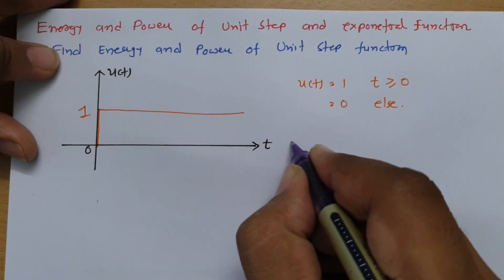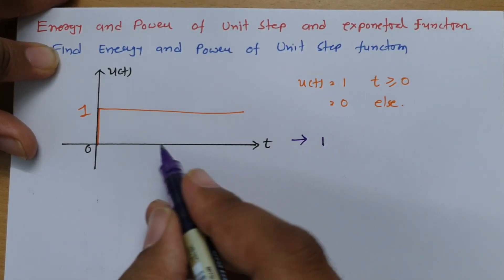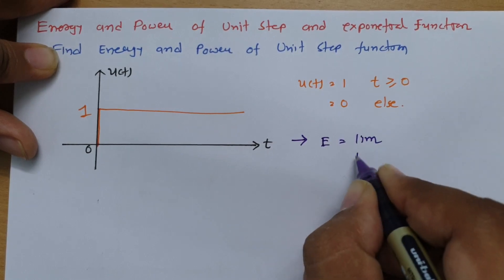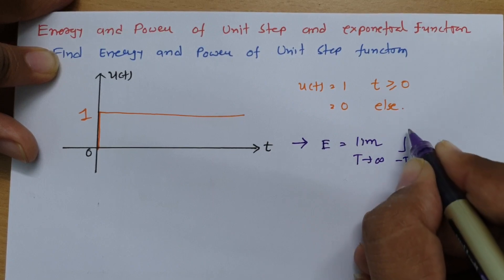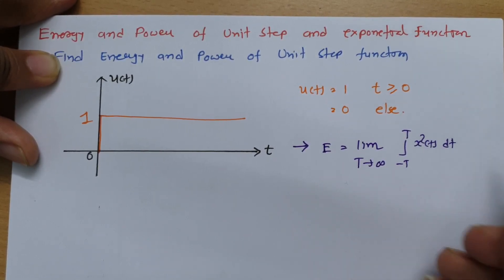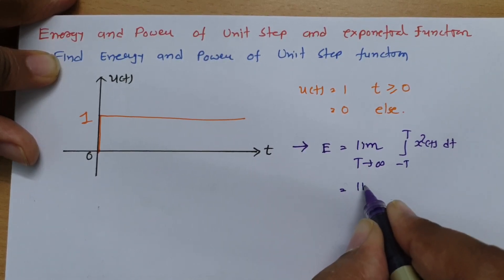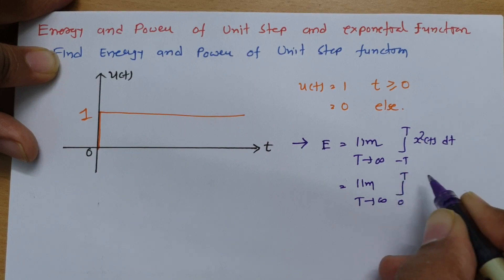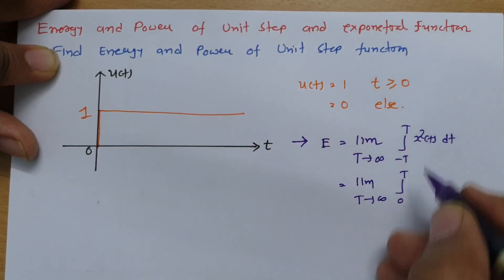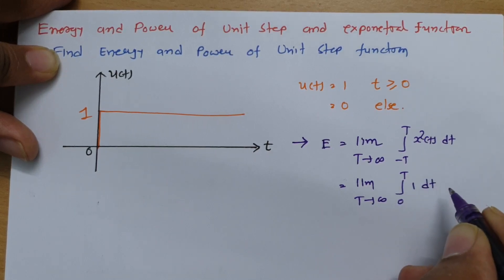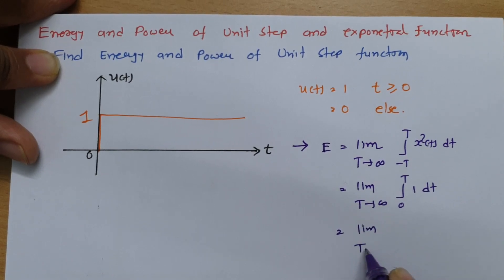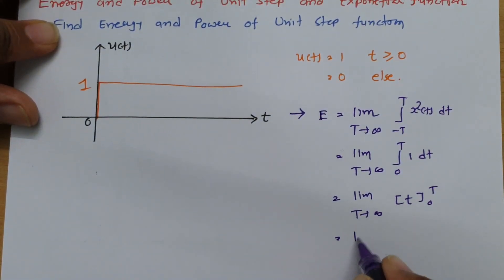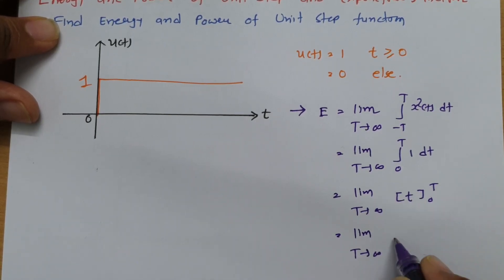The energy of this signal is defined over 0 to infinity. Using the energy formula, we compute the limit as T tends to infinity of the integral from minus T to T of x²(t) dt. Since the function is 0 for negative t, this reduces to the integral from 0 to T of 1² dt, which gives us t evaluated from 0 to T.